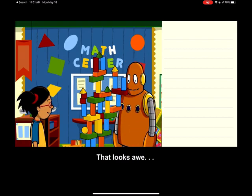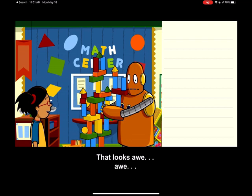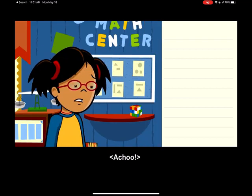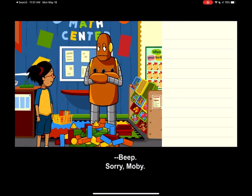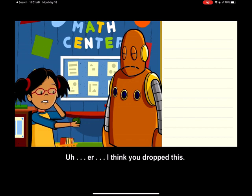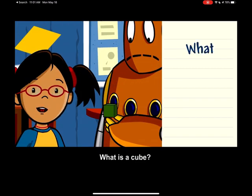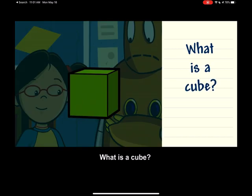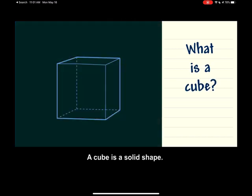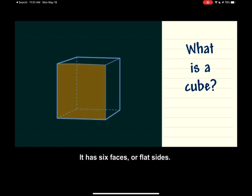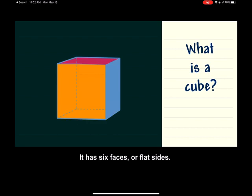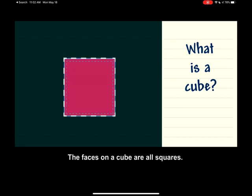Wow, Moby. That looks all... achoo! Sorry, Moby. I think you dropped this. What is a cube? A cube is a solid shape. It has six faces or flat sides. The faces on a cube are all squares.